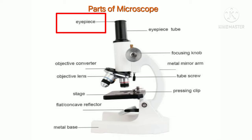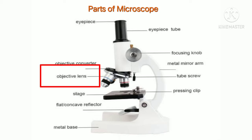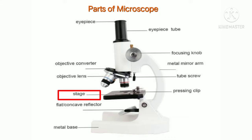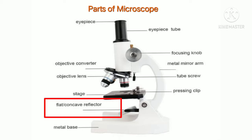A microscope has an eyepiece through which you see the specimen, and objective lenses. There are three to four different types of objective lenses based on power: scanning, low power field, high power field, and oil immersion. An objective converter lets you switch between lenses. The stage is where you place the slide and specimen. Below the stage is a diaphragm to adjust light intensity.